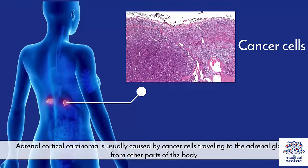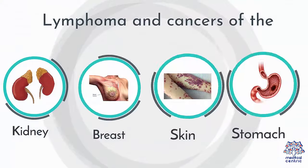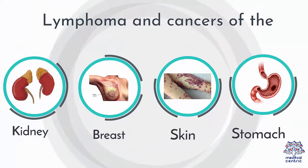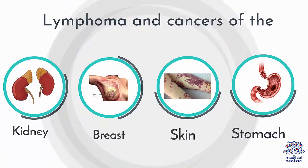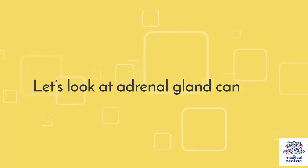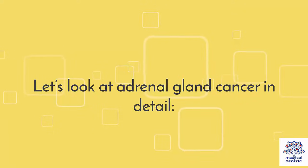Adrenal cortical carcinoma is usually caused by cancer cells traveling to the adrenal glands from other parts of the body. Lymphoma and cancers of the kidney, breast, skin and stomach are most likely to cause this. Let's look at adrenal gland cancer in detail.